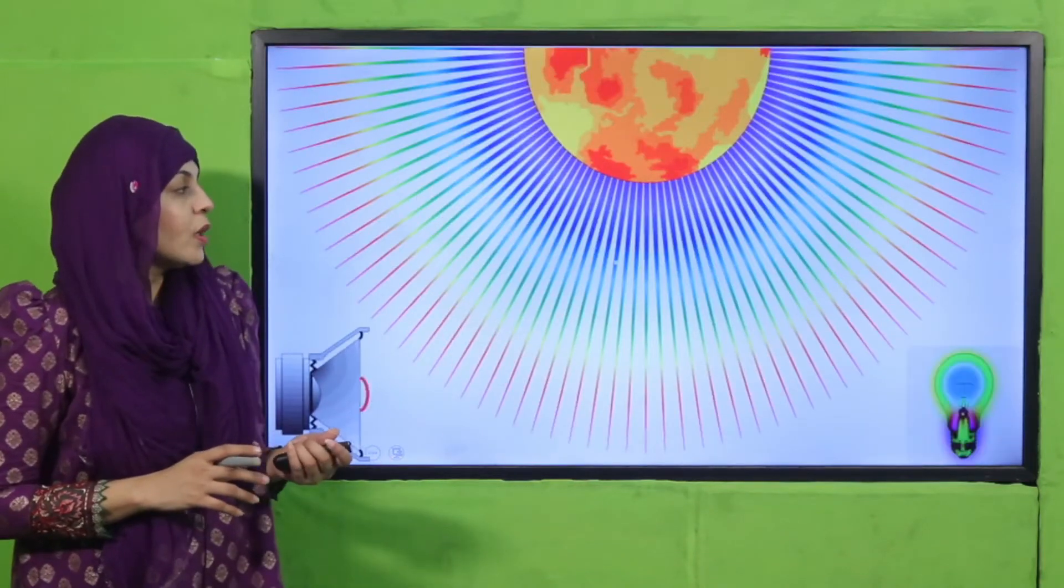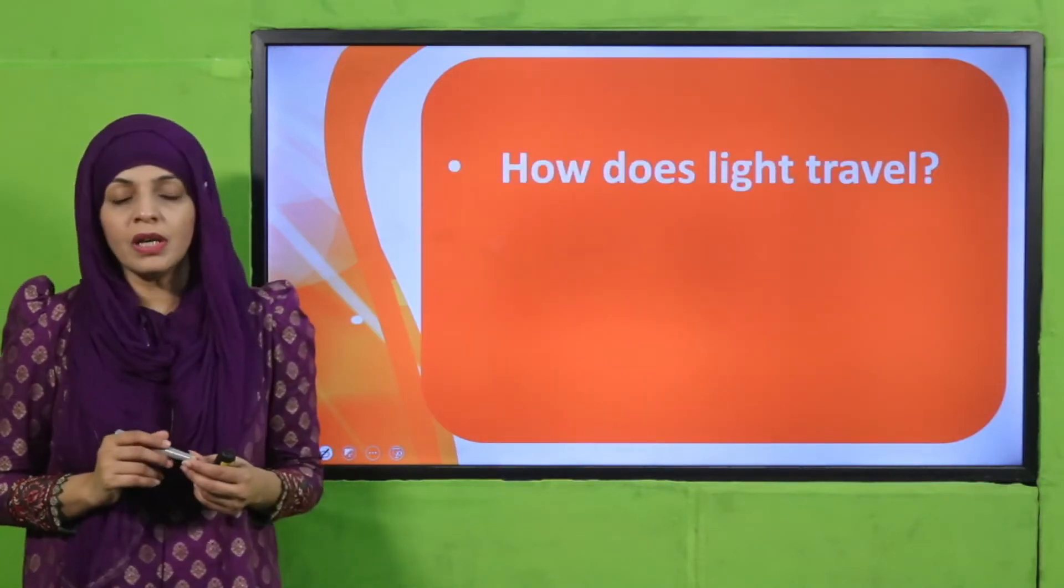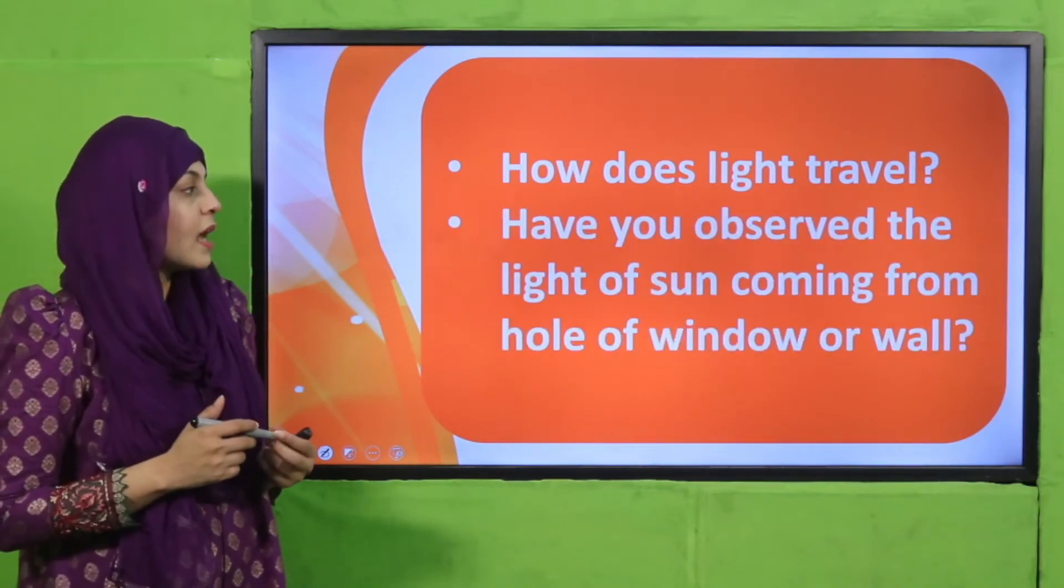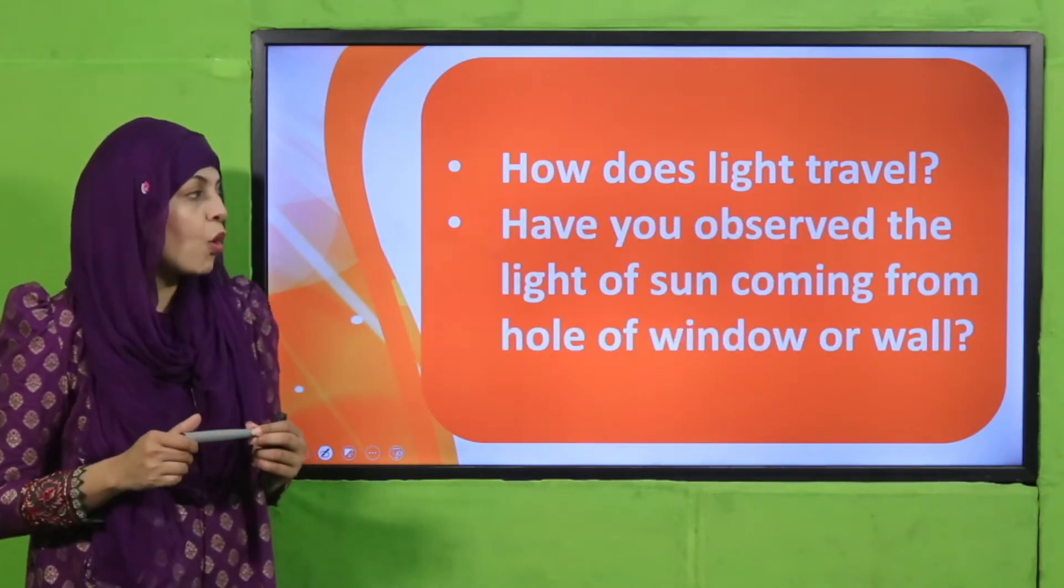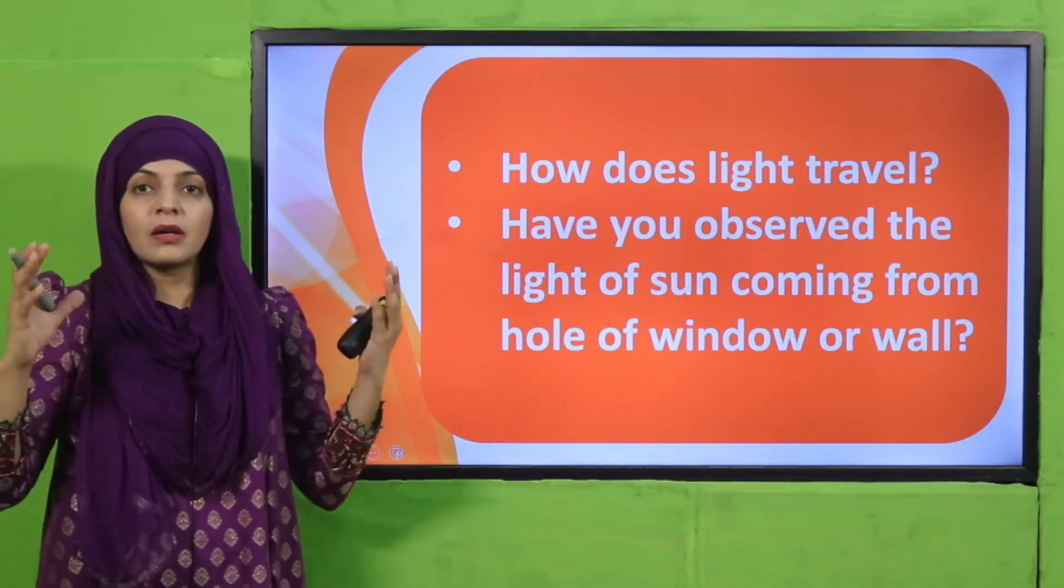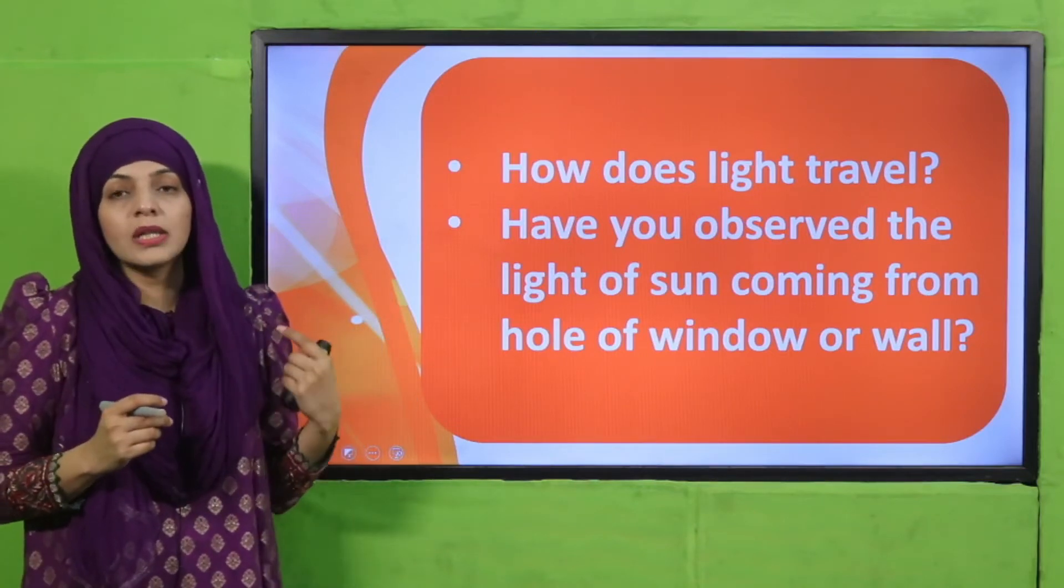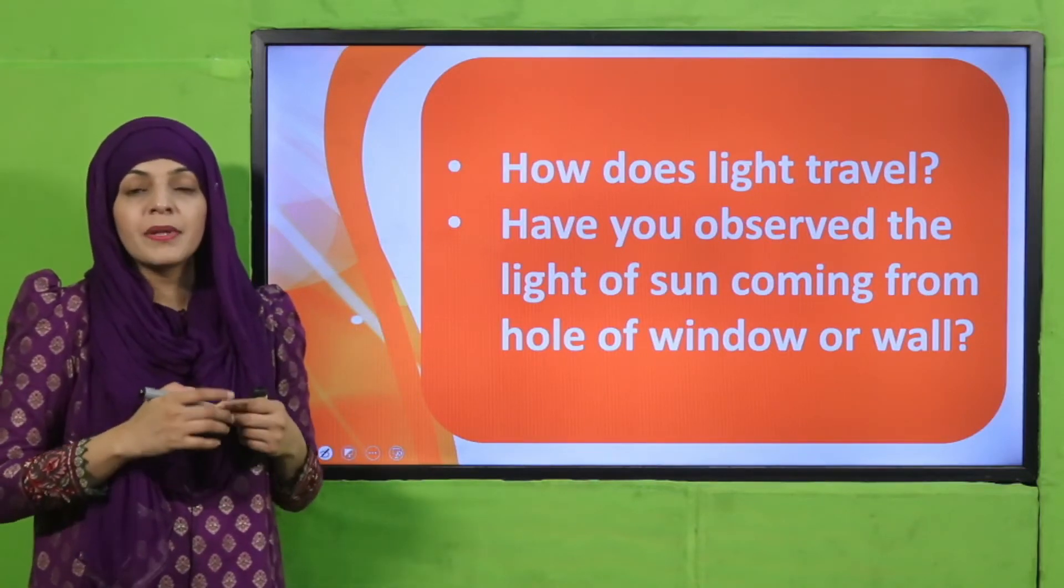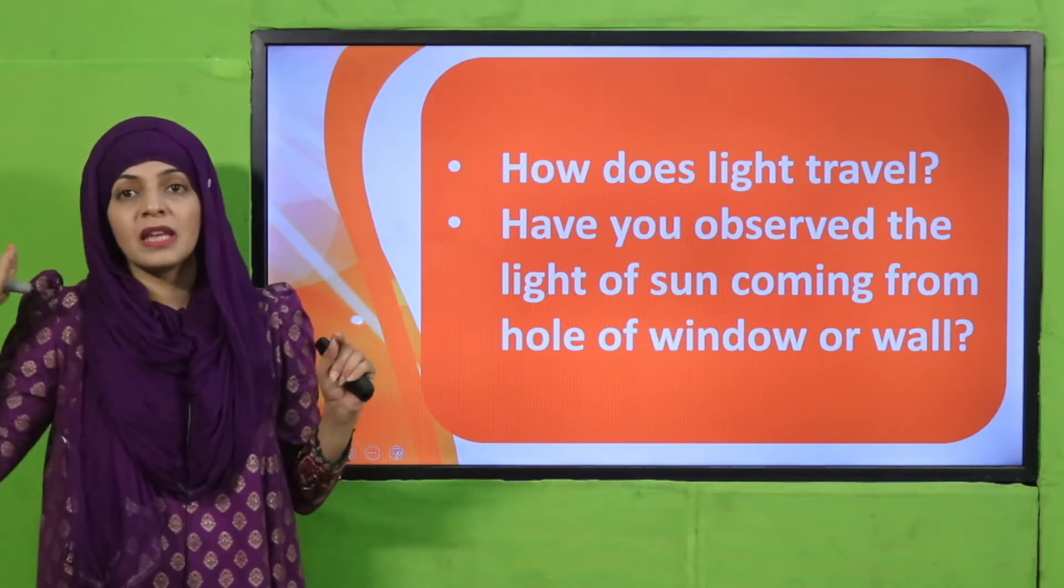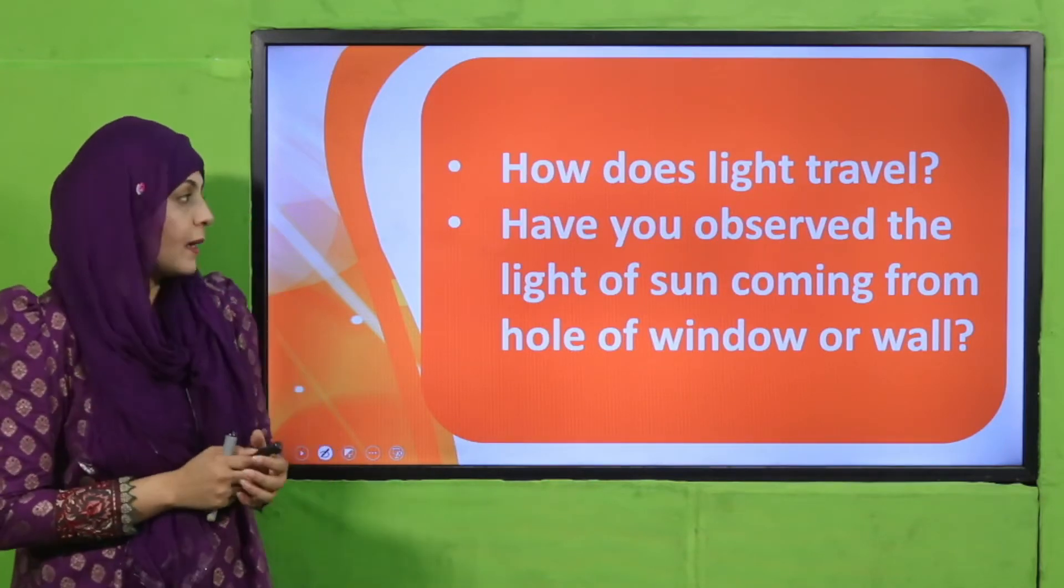Now let's move forward towards the pre-reading question. How does light travel? Light travels in a straight line. Very good. Have you observed the light of sun coming from a hole of window or a wall? When you see light coming through a hole in a room, you observe straight lines of light. This shows us that light travels in a straight line.